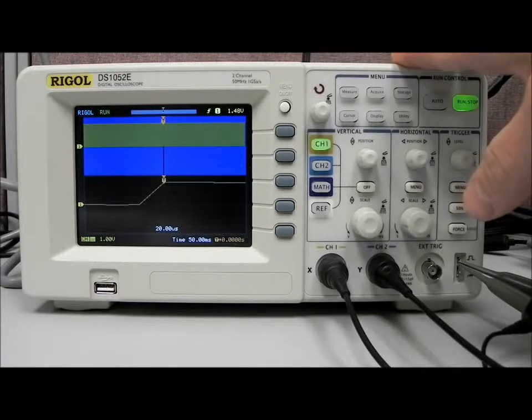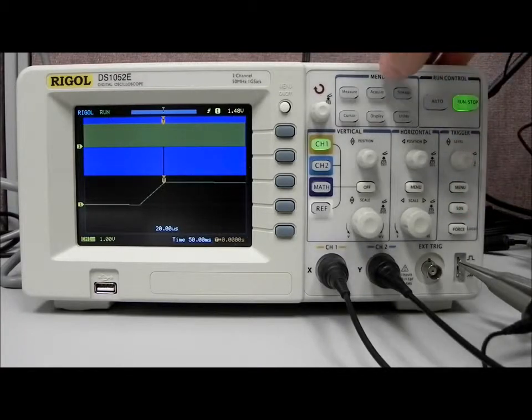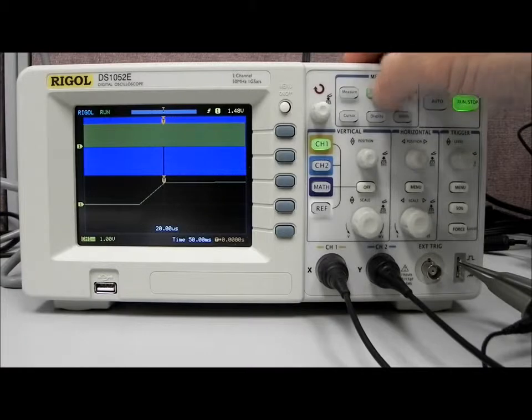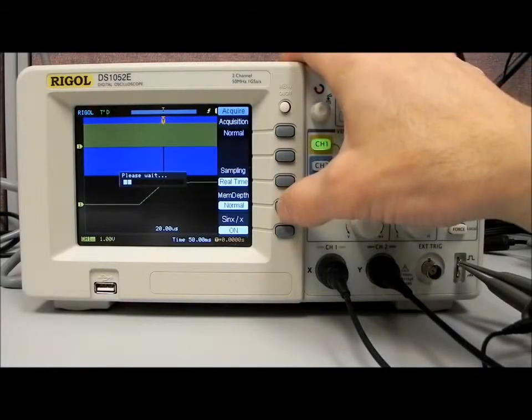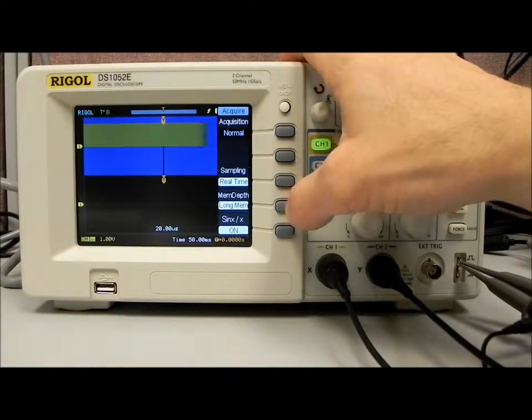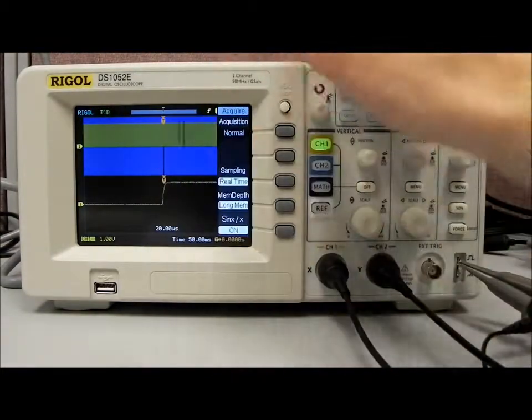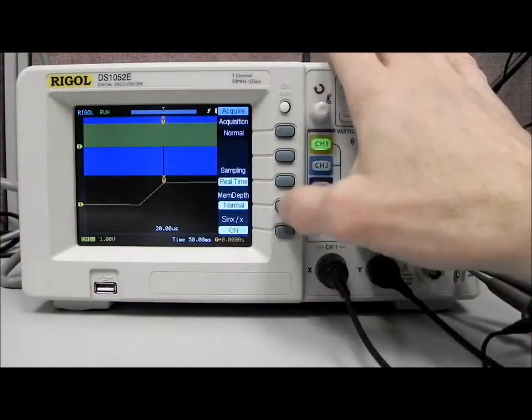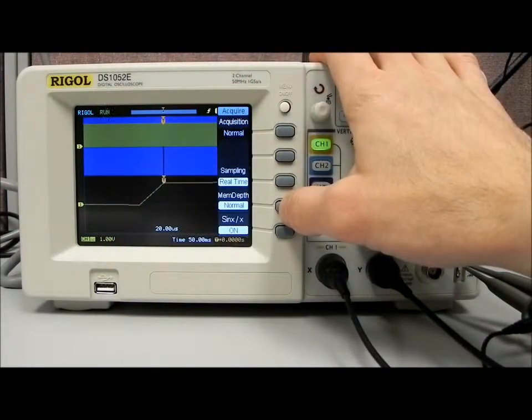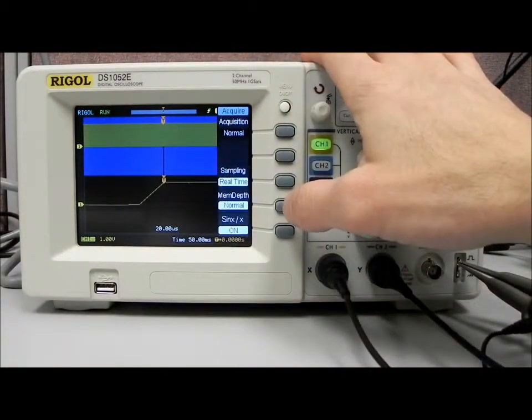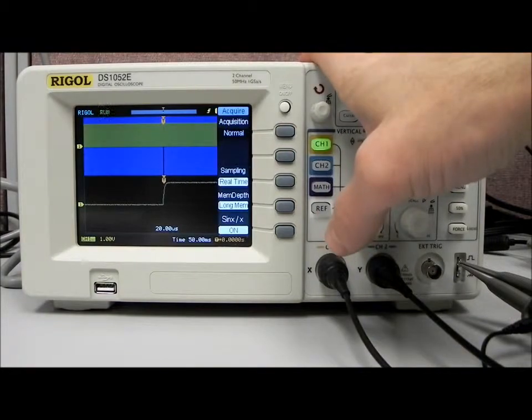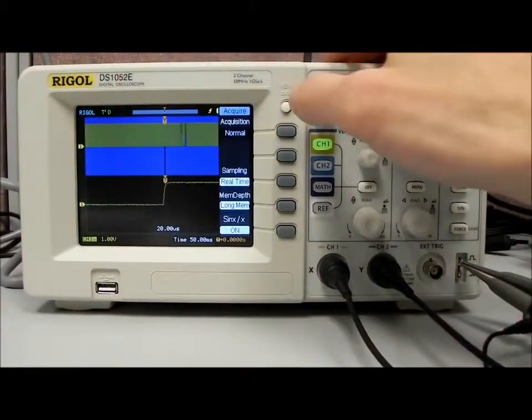We're acquiring in the normal mode about sixteen thousand points per waveform. So what we can do now is actually go to the long memory mode, another feature of this particular model of scope. The DS and E series both have long memory. Go to acquire and we go to normal memory depth and we're actually going to go to long memory, and you can see now it's filled in quite a bit. So let's go back to normal. You can see we don't have very much resolution in normal mode because we're acquiring so many data points over 50 milliseconds. We can actually go to long memory. That's going to give us a million points and you can see it fills in that very nicely.